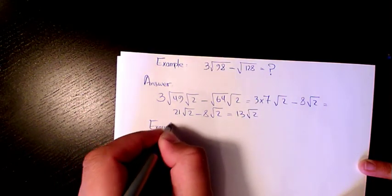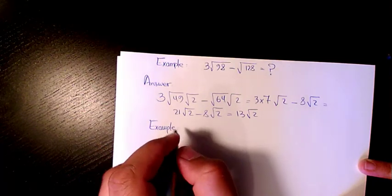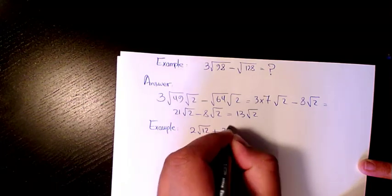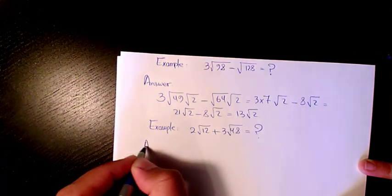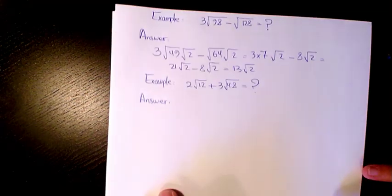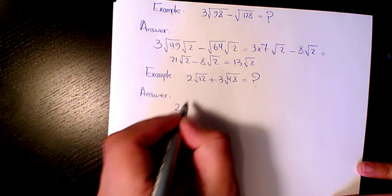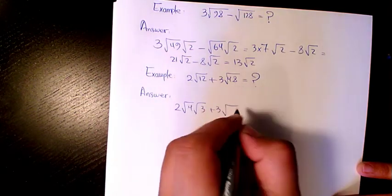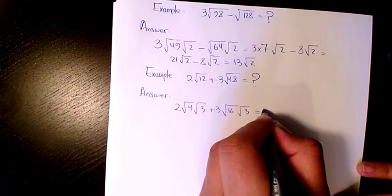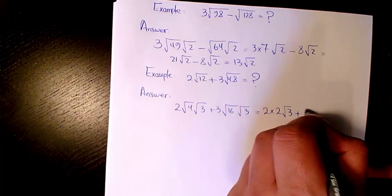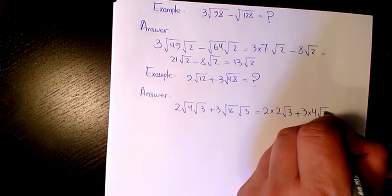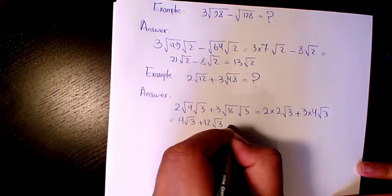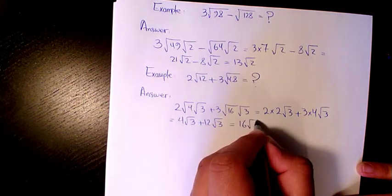Next example, it will be 2√12 + 3√48. The answer is: 12 is 4 × 3, 48 is 16 × 3. That makes it 2 × 2√3 + 3 × 4√3. That makes it 4√3 + 12√3. 4 + 12 is 16√3.